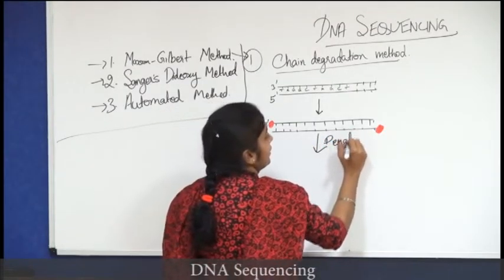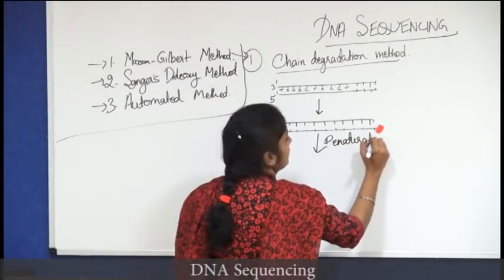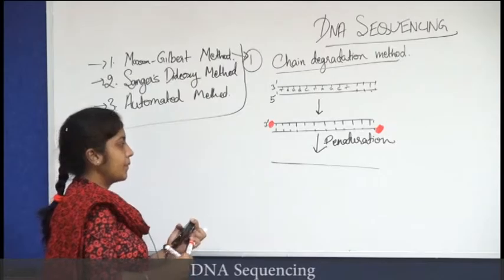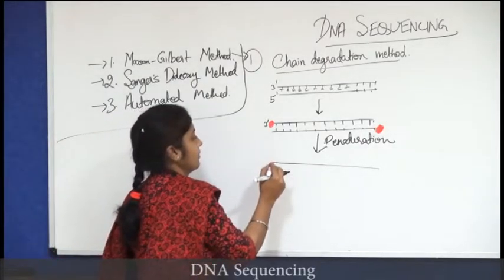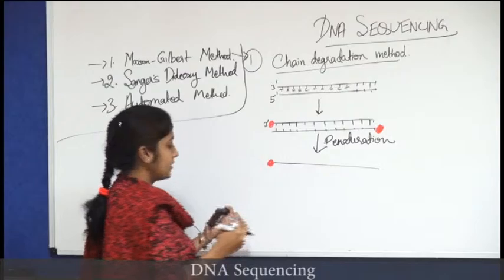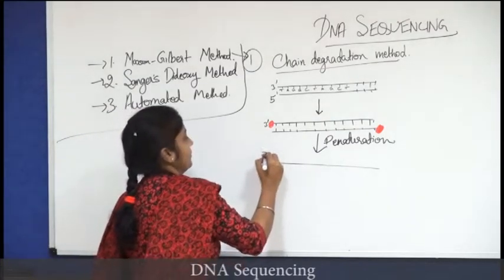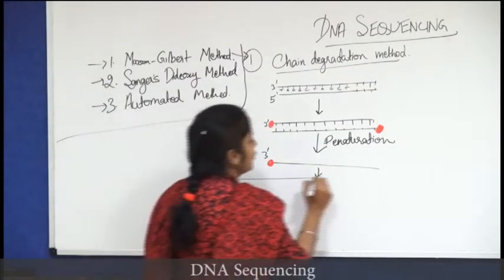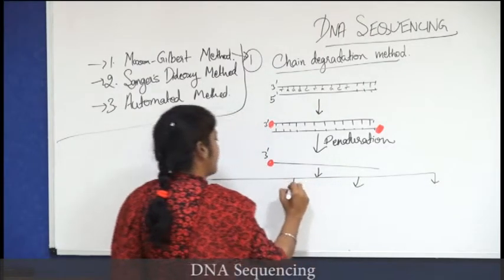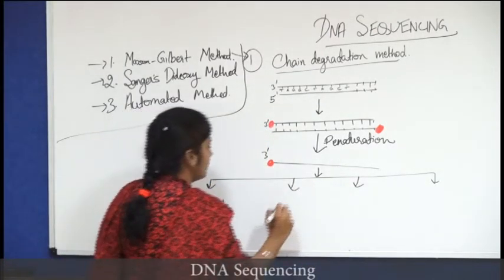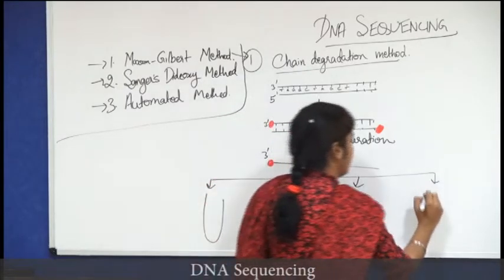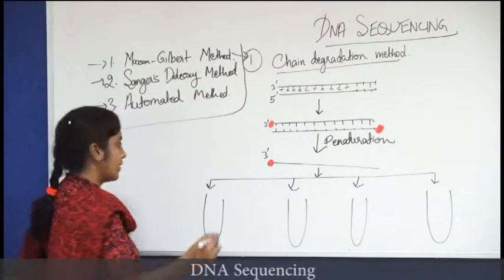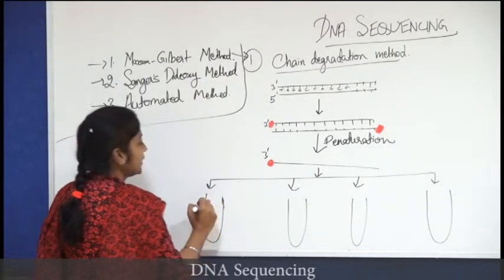Next, denaturation: the strands are separated and we get single-stranded DNA. Now this sample is divided into 4 tubes and in each of the tubes different chemicals are added in a limited amount.